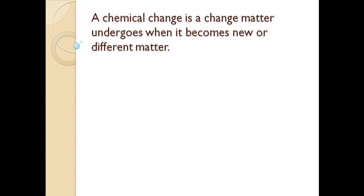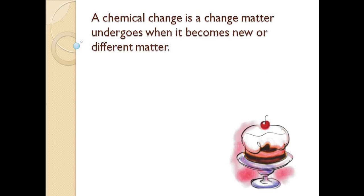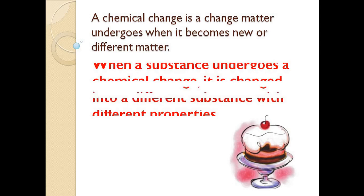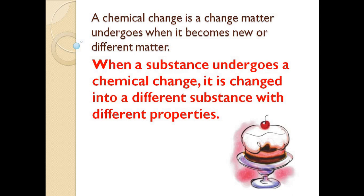Now let's move to the second type of changes that could happen to matter, which is a chemical change. What is a chemical change? A chemical change is a change matter undergoes when it becomes new or different matter. When a substance undergoes a chemical change, it's changed into a different substance with different properties.